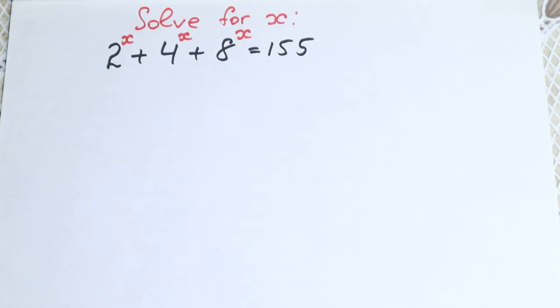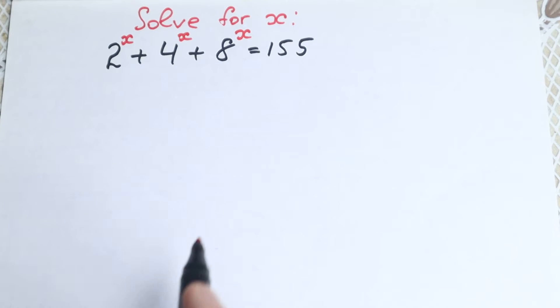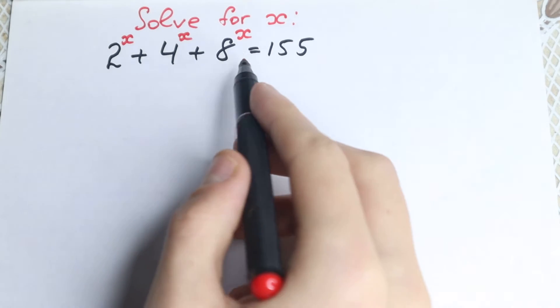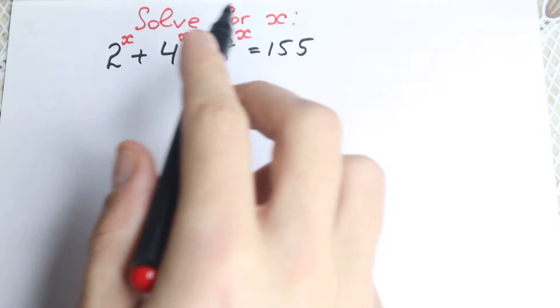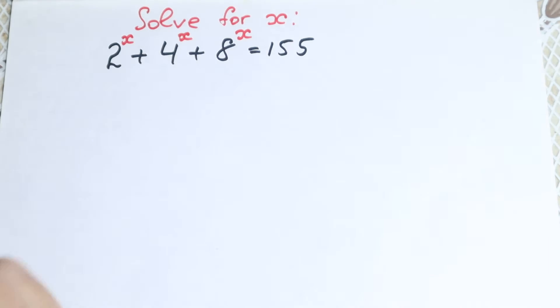Happy to see you here! In this video we're going to solve this interesting exponential equation: 2 to the x plus 4 to the x plus 8 to the x equals 155.